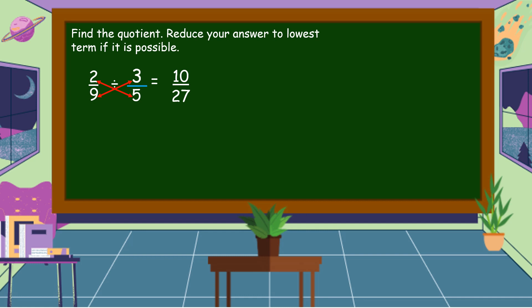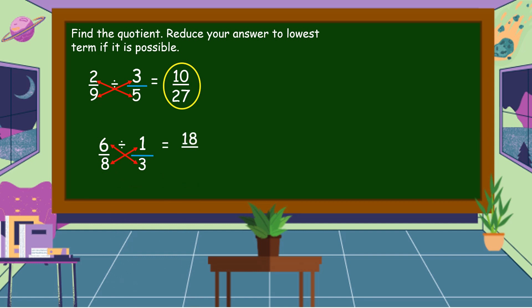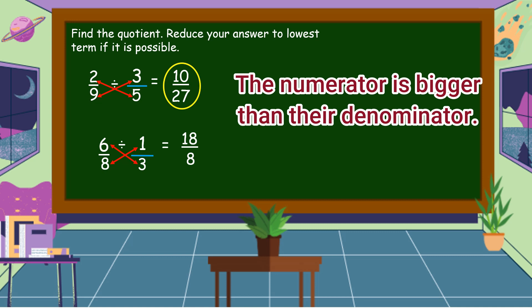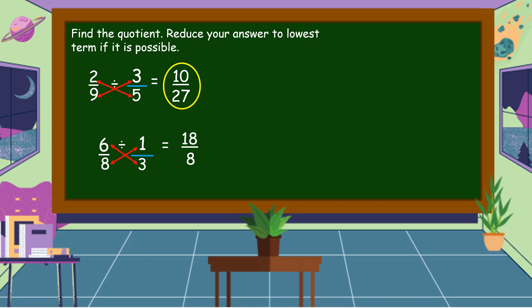Likewise, twenty-seven is not divisible by five. So, ten over twenty-seven is in the lowest term. Another example. Six-eighths divided by one-third. So, cross multiply. Six times three is equal to eighteen. Eight times one is equal to eight. So, ang sagot natin ay eighteen over eight, na ito ay tinatawag natin improper fraction because the numerator is greater than the denominator. So, paano natin ito i-reduce sa lowest term?